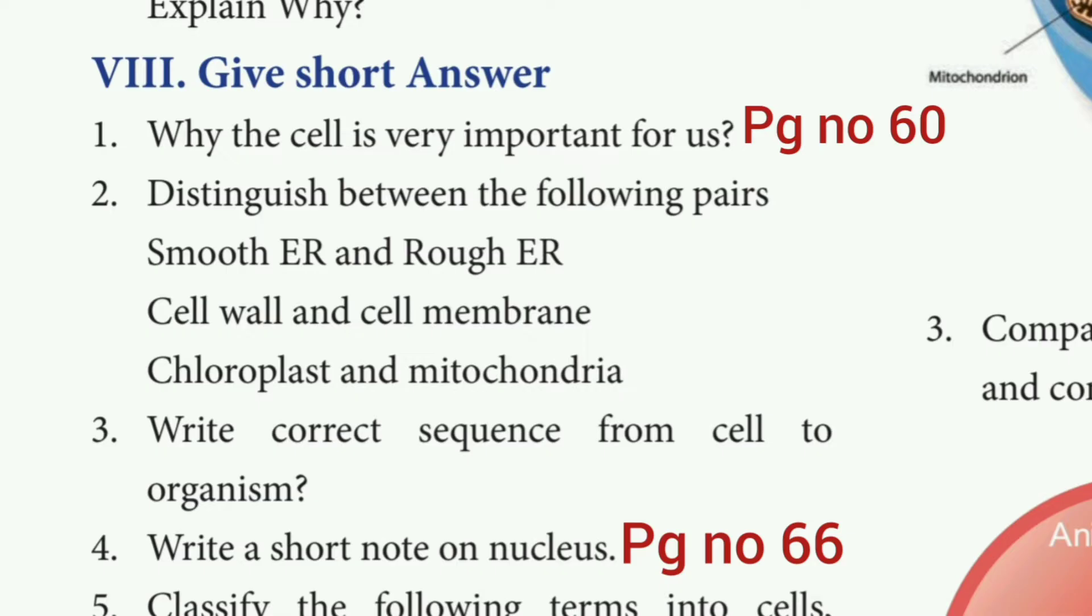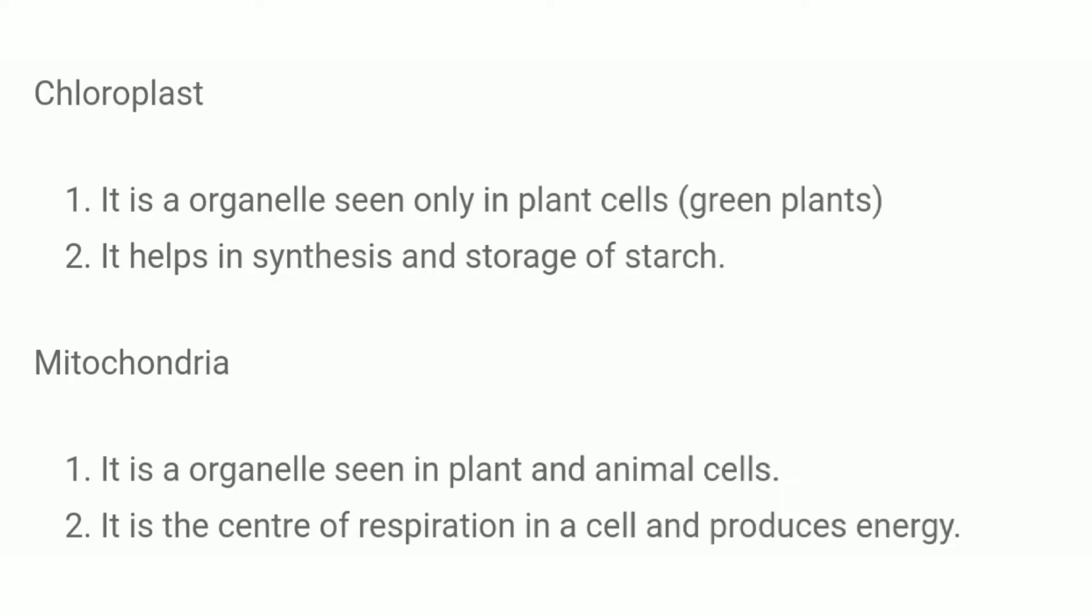Then third one: Chloroplast and mitochondria. The answer is chloroplast: It is an organelle seen only in plant cells. It helps in synthesis and storage of starch. Then mitochondria: It is an organelle seen in plant and animal cells. It is the center of respiration in a cell and produces energy.